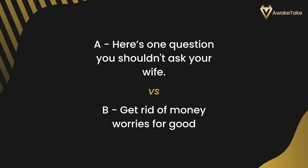Then we have headline two — this might look a little old. Option A is 'Here's one question you shouldn't ask your wife,' and Option B is 'Get rid of money worries for good.' In this case it would be B, because it has a promise of benefit while A is purely a curiosity headline. As we said, when using only one type, a self-interest headline will be stronger than a pure curiosity headline.